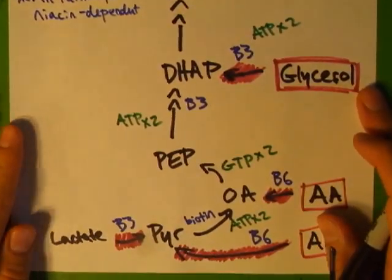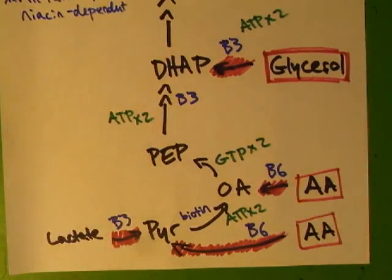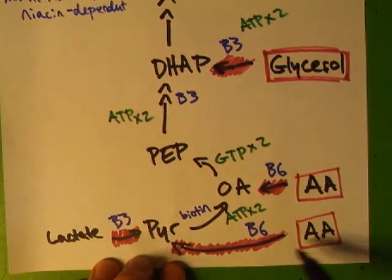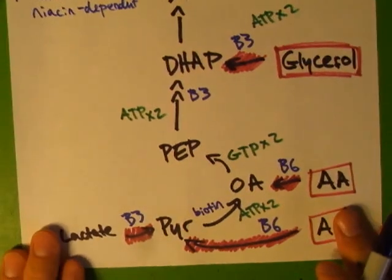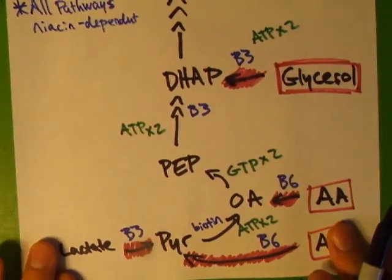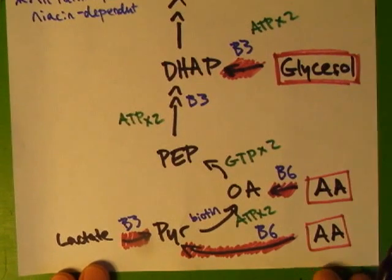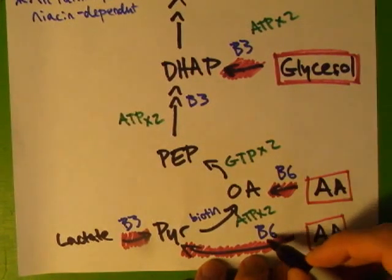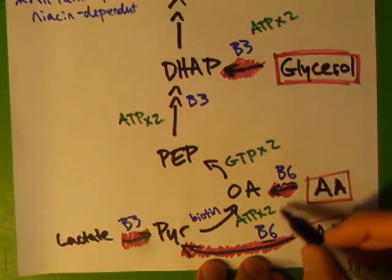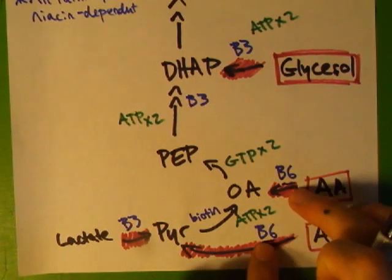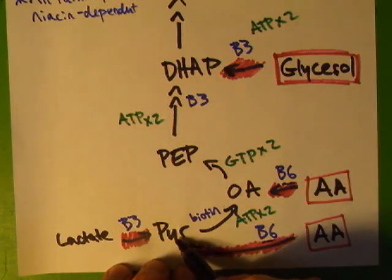You should be able to name off all six of the different metabolites or different glucose precursors and be able to tell the pathway they get there, which enzymes are used, and how much energy is used to get there. So this is a little summary. Make sure you can draw this out. The important thing to know is the amino acids, both are B6-dependent. That aminotransferase enzyme here.